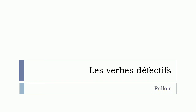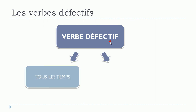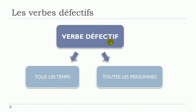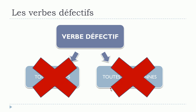When we talk about un verbe défectif, we are talking about a certain type of verb. Normal verbs can be conjugated at all the tenses — tous les temps — and for all the persons — toutes les personnes. But when we talk about un verbe défectif, it means that it won't exist for all the tenses, or it won't be conjugated for all the persons.